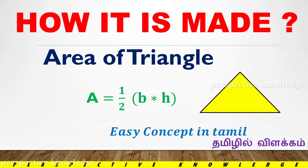Hi everyone. In this video we will talk about the area of a triangle. The area of a triangle A is equal to half bh. That is the square area formula, and we will talk about it in detail in this video.